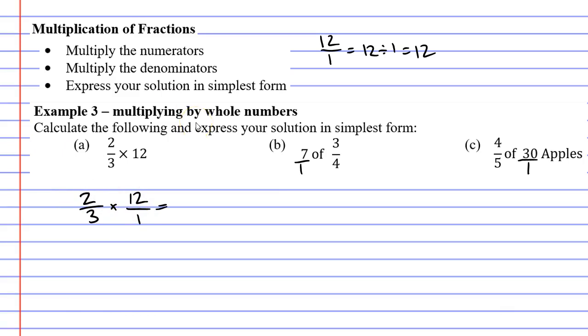So if we multiply it, we multiply the numerators. 2 times 12 is 24, and our denominators 3 times 1 is 3. So we have the fraction 24 over 3.